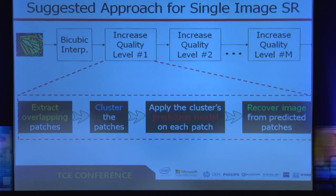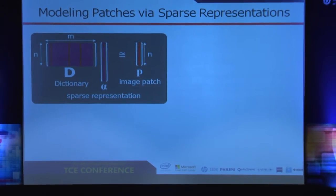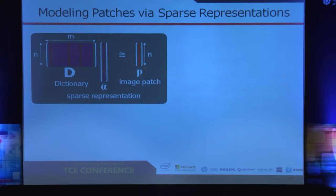Now I will focus on the prediction block. We follow the sparse representation paradigm for this prediction. This means we assume that an image patch can be approximated as a linear combination of a few atoms coming from a dictionary D — a matrix where each column is an atom. In this example, an image patch is approximated using three atoms from the dictionary.